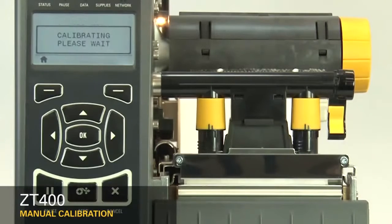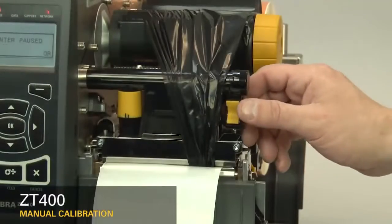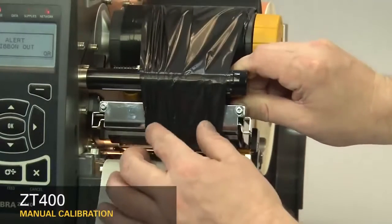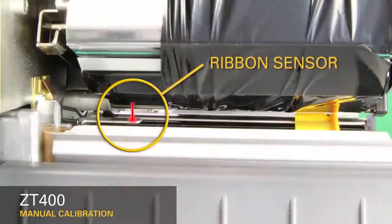When the printer has learned the correct settings, the display will show a reload all message. When reloading the media and ribbon, make sure the media and ribbon are fully inserted. Be sure that the ribbon is located under the ribbon sensor.